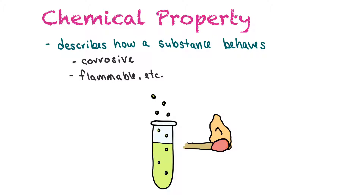The last thing we'll talk about is chemical properties, which describe how a substance behaves when it's changing from one substance to another. Examples include corrosive — does the chemical eat away at metals or burn skin? Is the substance flammable? Is it explosive? All of those describe how matter behaves, not how it appears, so those are chemical properties.